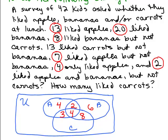Thirteen liked carrots but not bananas: here are the carrots, but I can't include those who also like bananas. So 3 and 10 — those two pieces add up to 13. I've used that clue. Now I can answer the question: how many liked carrots? The four pieces making up the carrot circle are 10, 3, 4, and 8. That's 10 plus 4 plus 8 plus 3, which equals 25. The answer to this problem is 25.